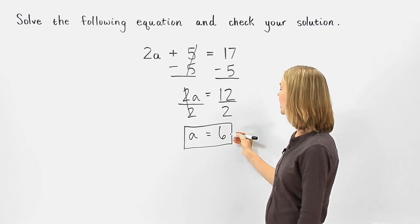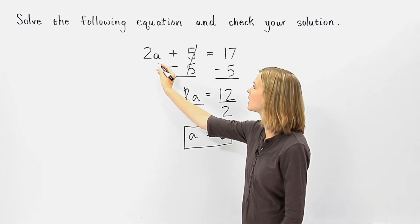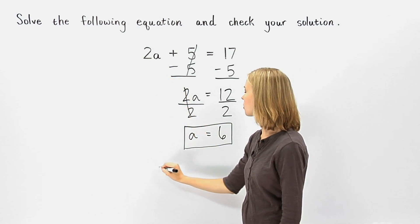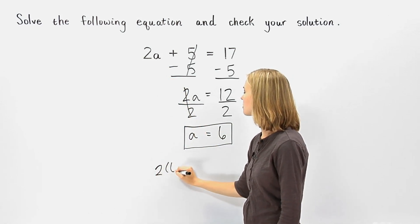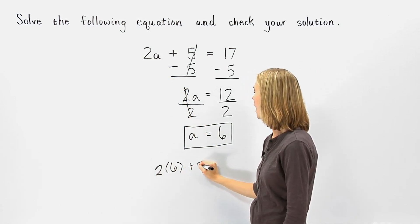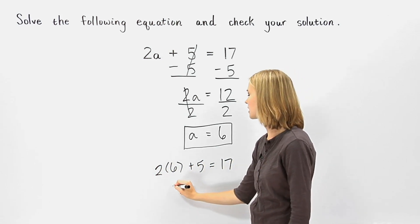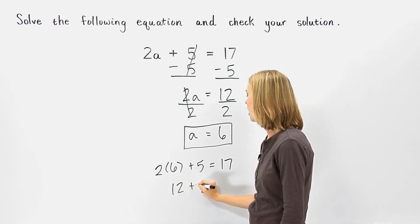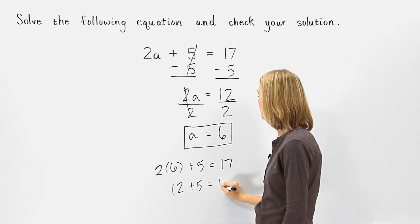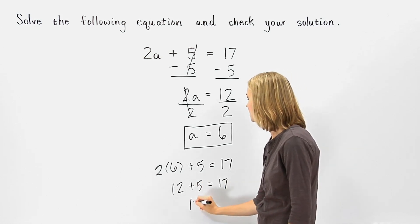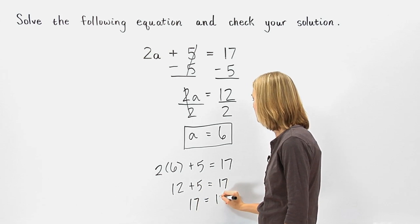To check our solution, we plug 6 back in for a in the original equation. So we have 2 times 6 plus 5 equals 17. 2 times 6 is 12, and we have 12 plus 5 equals 17. Or 17 equals 17, which is a true statement, so our answer checks.